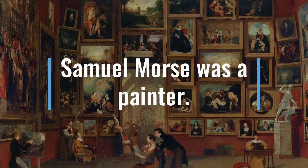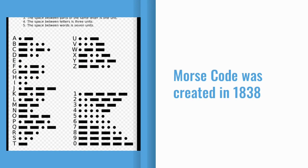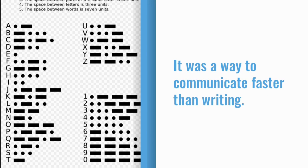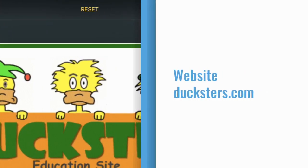Samuel Morse was a painter. Morse code was created in 1838. The purpose of Morse code is to communicate without the need to use letters. It was a way to communicate faster than writing. The website I used was Duckster.com.